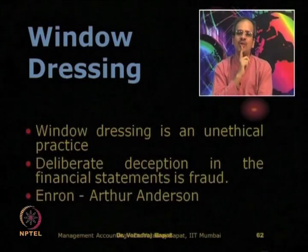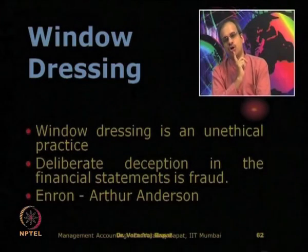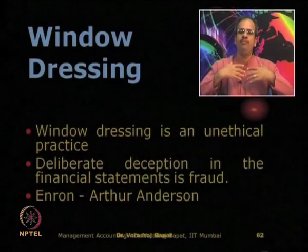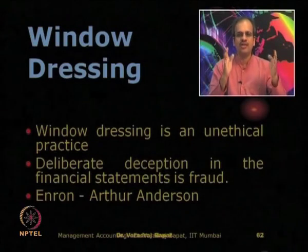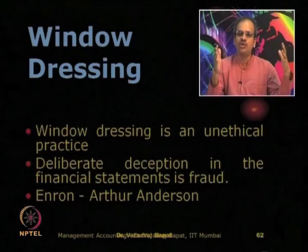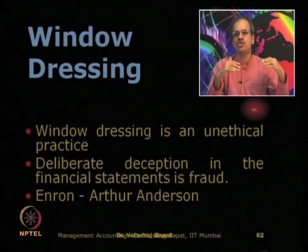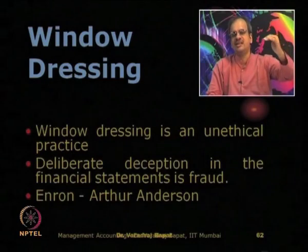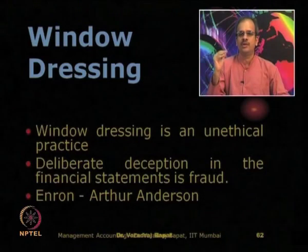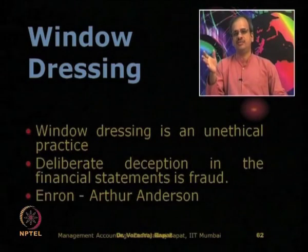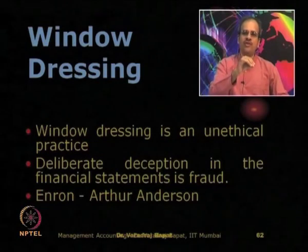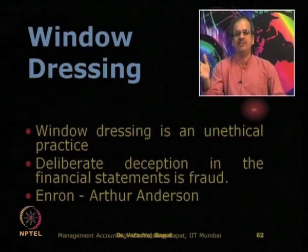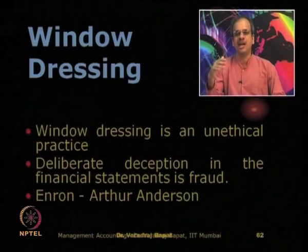Whenever you think of window dressing, you must have heard the name Enron — a very famous, rather infamous case of window dressing known all over the world, one of the biggest frauds. Enron was a power company having projects in 40 to 45 countries. What Enron was doing was tremendously inflating the cost of their projects — everywhere showing high value of assets, while the actual value was much lower. Their auditor was Arthur Anderson, who was also found at fault. Both Enron and Arthur Anderson had to close their businesses, and their promoters and directors were sent to jail.